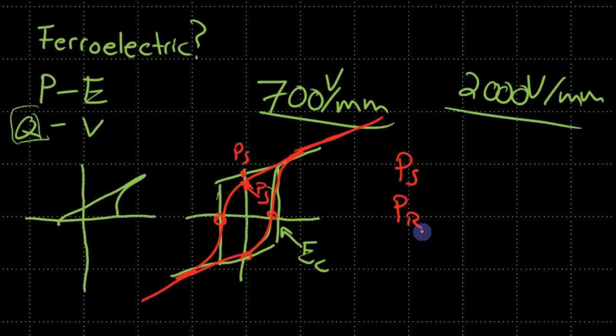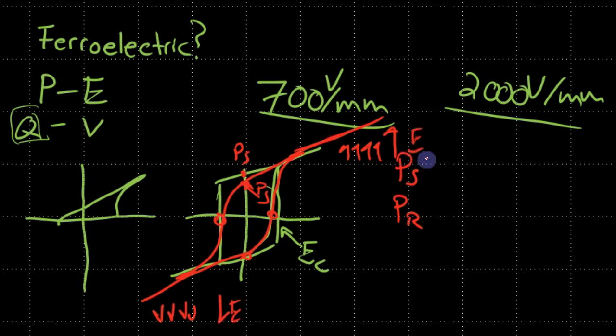In this single-domain state, all the domains are pointing in one direction. Here all domains point down with electric field pointing down, and here the electric field is pointing up. In the middle, switching is happening — most are switched down — and by this point we're pretty much all switched in a single direction. This covers how you identify a ferroelectric: spontaneous polarization, remnant polarization, and coercive field are the signatures.